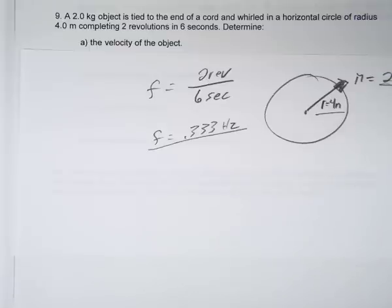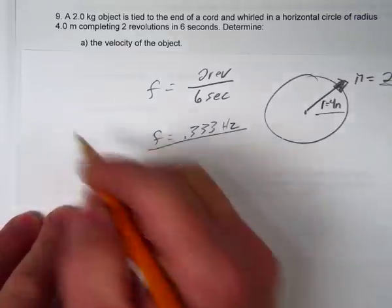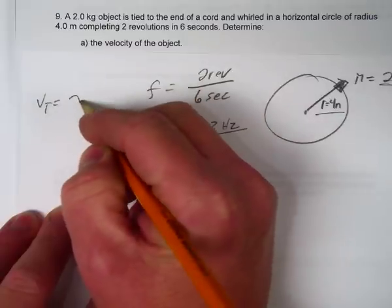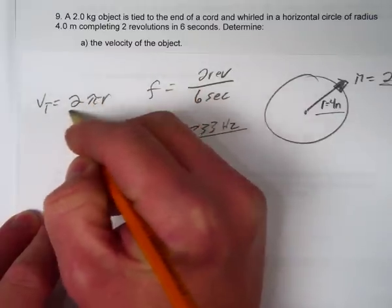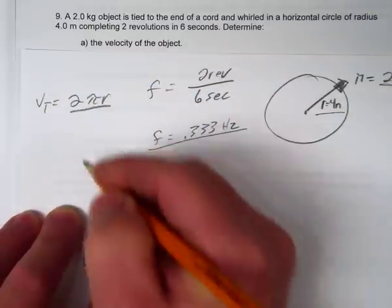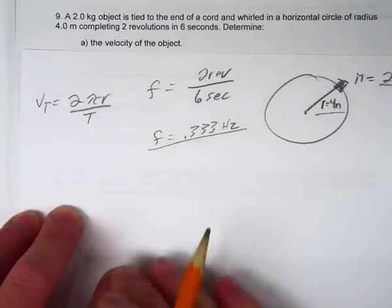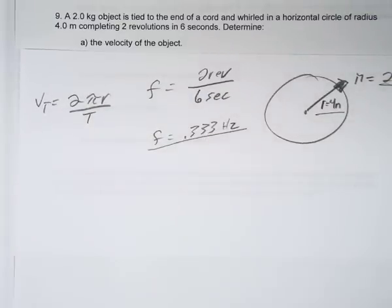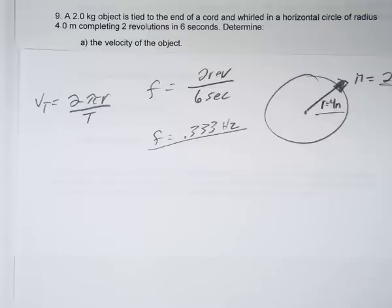We have a bunch of different formulas for tangential velocity. The basic one says tangential velocity equals the circumference of the circle (2πr) divided by the period - the time it takes to go around. Since period and frequency are inverses of each other, you can replace T with F anywhere.